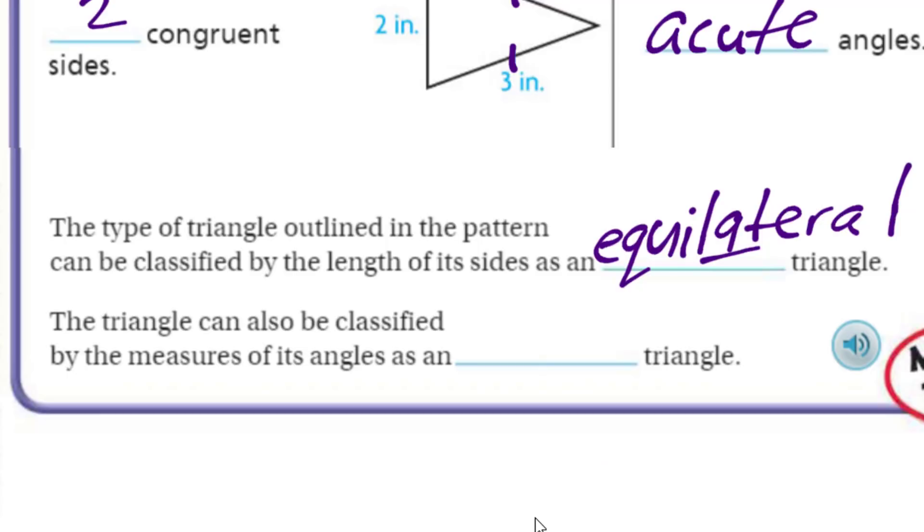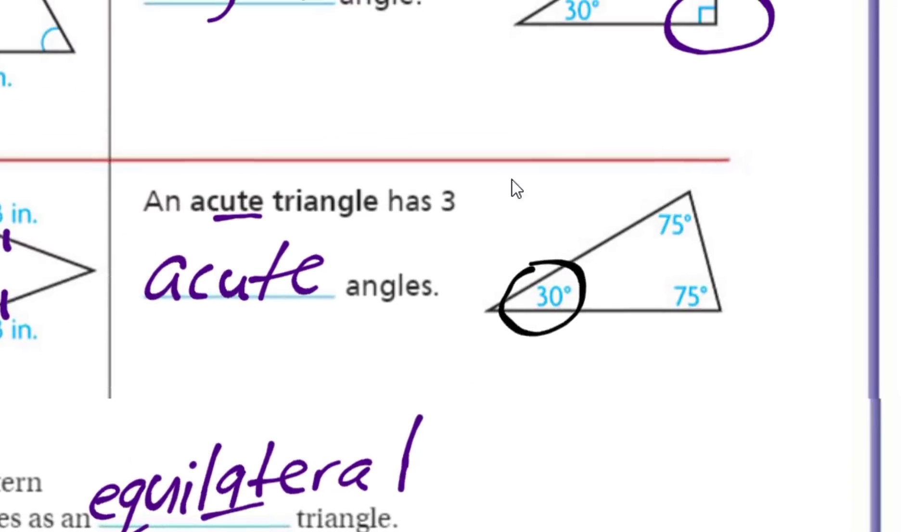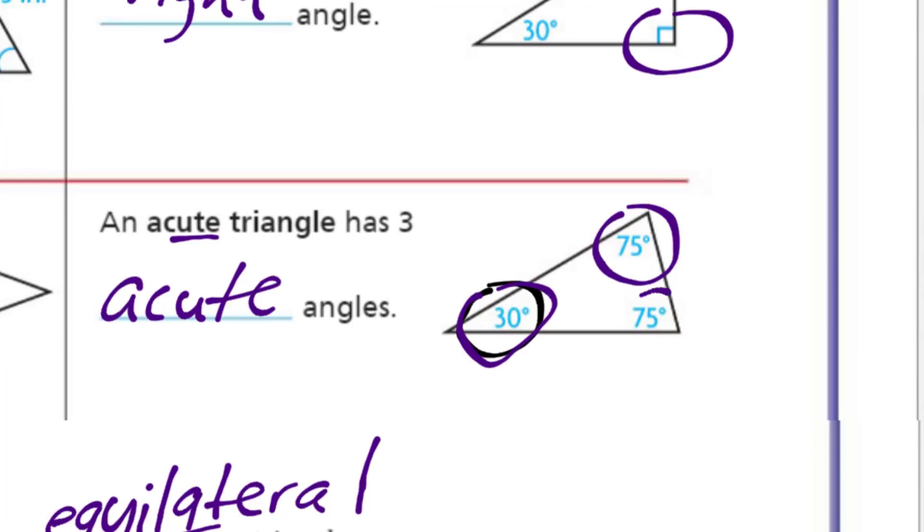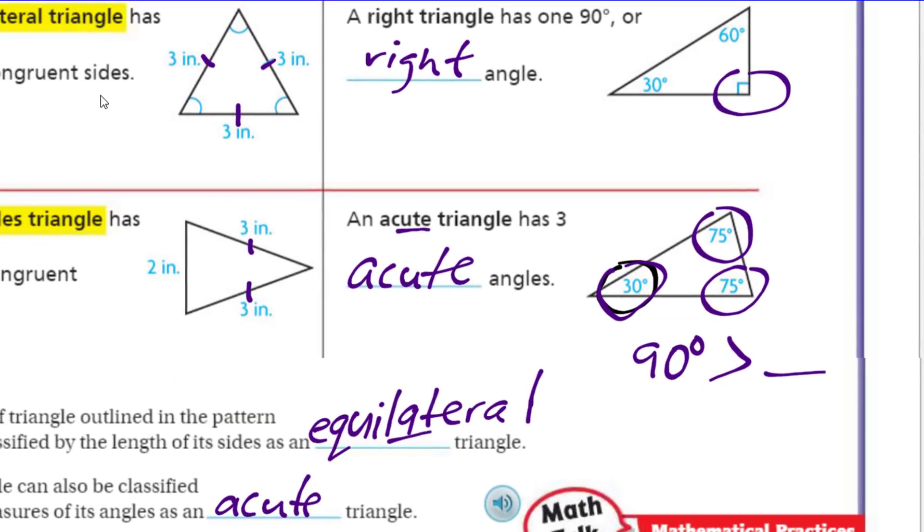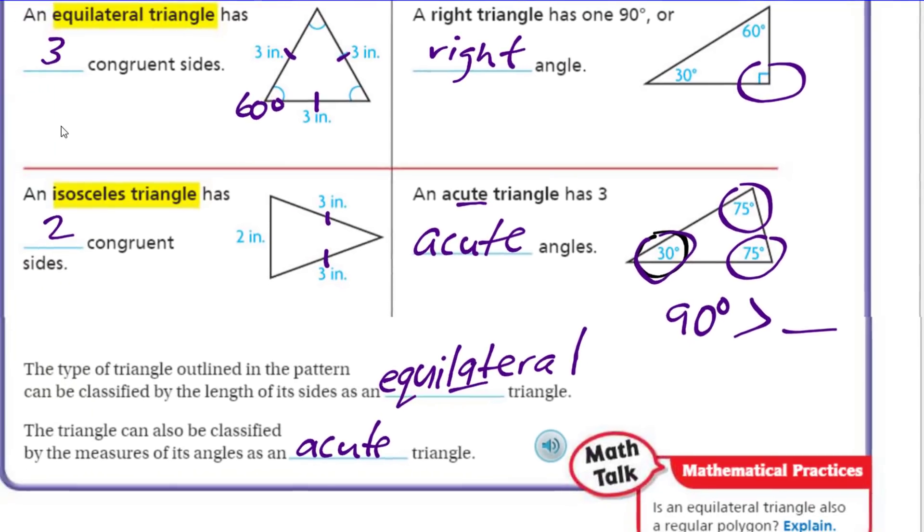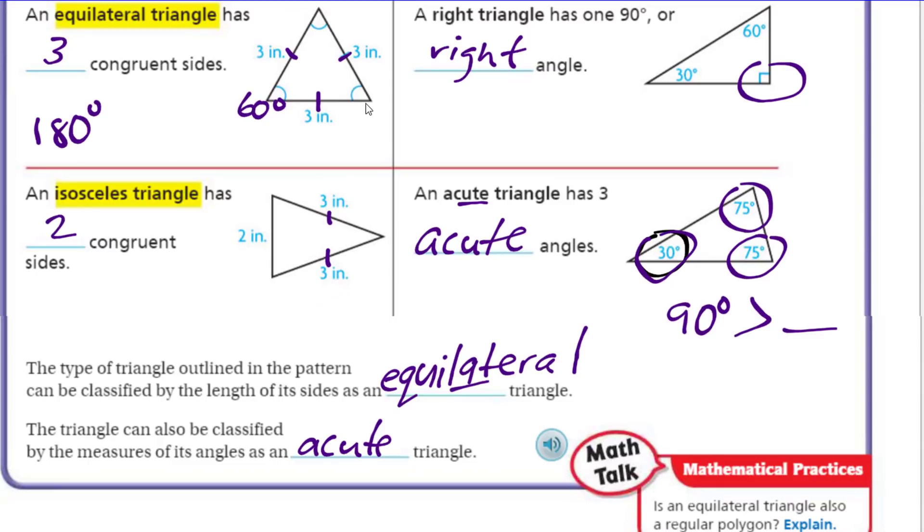It's just a triangle that can also be classified by the measures of its angles as an acute triangle. Why? Because their three angles are acute angles because they're less than 90 degrees. Our equilateral triangle actually has three angles and each one has to be 60 because there's 180 degrees in every single triangle that has ever been drawn in the history of time. That makes it sound so dramatic. It's so true.